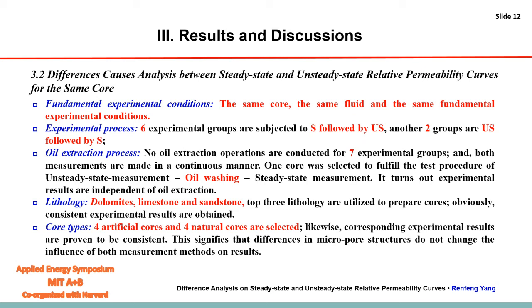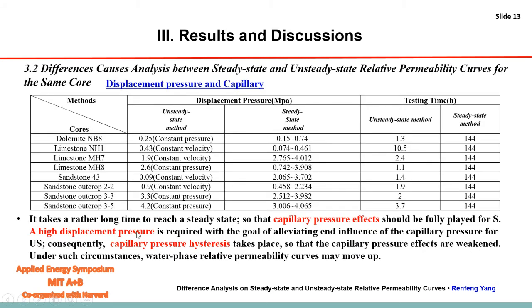We conclude there are three main causes. The first is the displacement pressure and capillary pressure. It takes a rather long time to reach a steady state, so capillary pressure effects are fully expressed for the steady-state method. A high displacement pressure is required to alleviate the influence of capillary pressure for the unsteady-state method. Consequently, capillary pressure hysteresis takes place and capillary pressure effects are weakened, causing the water-phase relative permeability curve to move up.